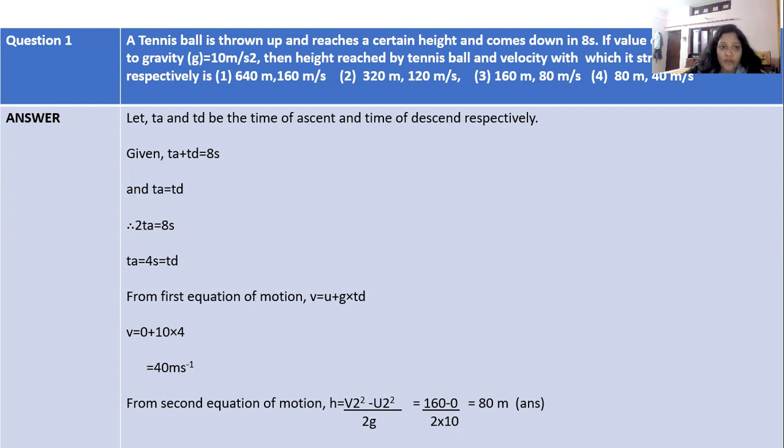Now, put the value in first equation of motion. V = U + gt. As U is 0 + 10 × 4, we will get 40 m/s as final velocity.